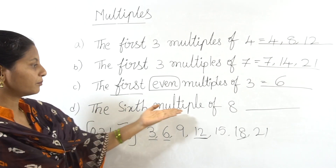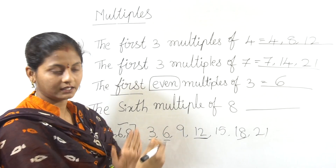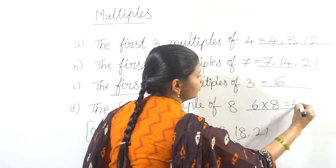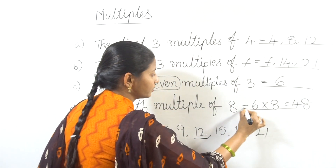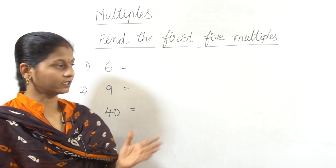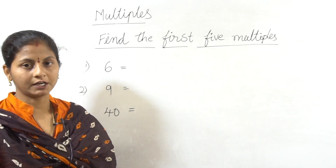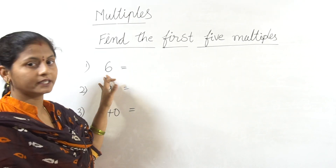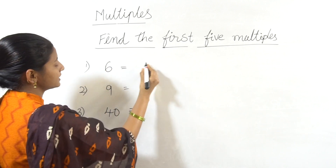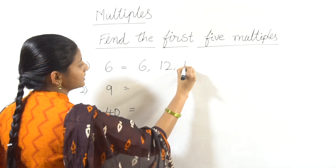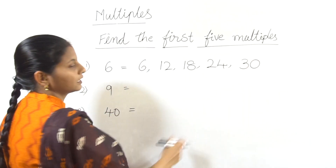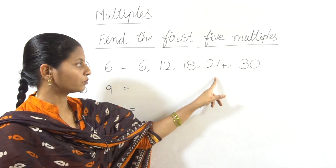The first 5 multiples of 6: 6 ones are 6, 6 twos are 12, 6 threes are 18, 6 fours are 24, 6 fives are 30. So the first 5 multiples of 6 are 6, 12, 18, 24, 30.